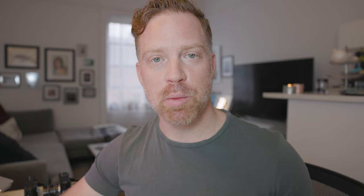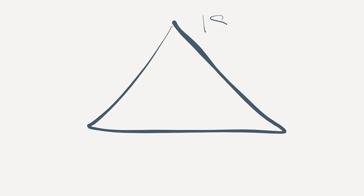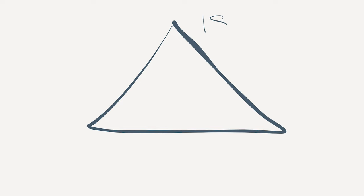Before we jump in, I want to talk basics. Let's make sure we're on the same playing field when we're talking about exposure. There are three pieces of exposure, referred to as the exposure triangle. The first is ISO, the second is aperture, and the third is shutter speed. These three pieces make up the exposure triangle, and it's important to have at least a basic understanding of each.